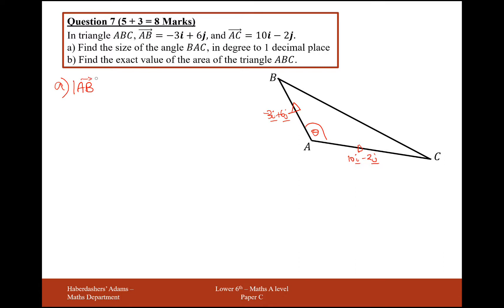So AB is going to give me a side length of, well if I treat this as a Pythagoras triangle, it's going to be left 3, up 6. So it's going to be 6 squared add 3 squared, which is going to equal 36 add 9, so that's the square root of 45.